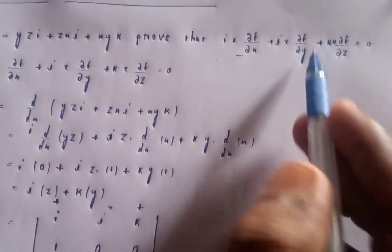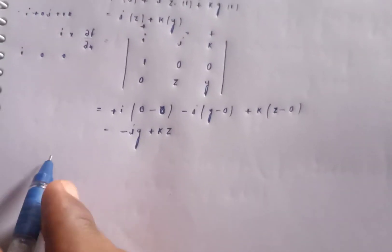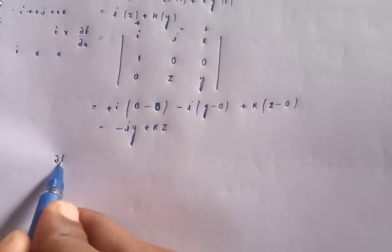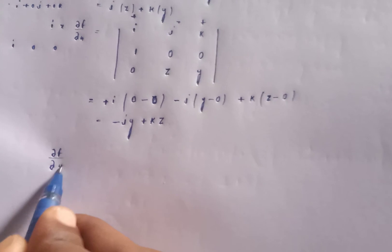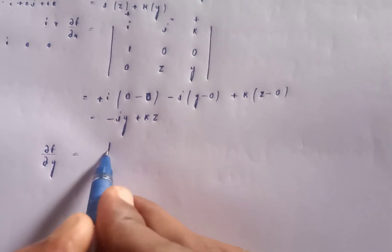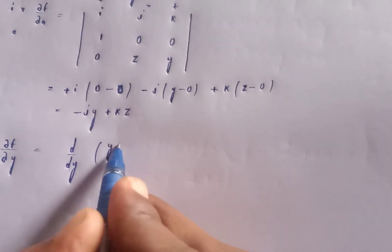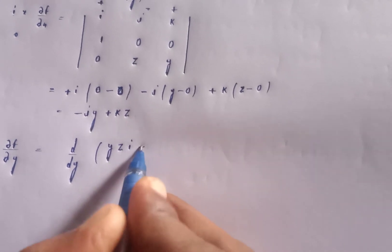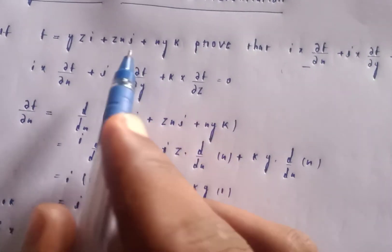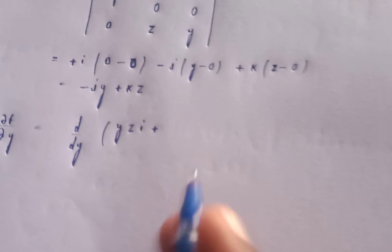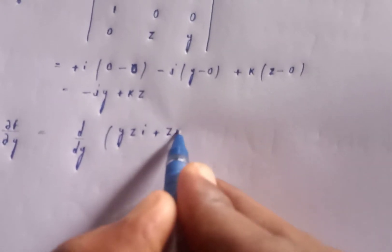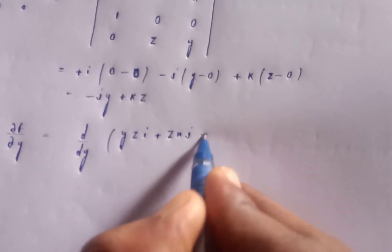Now compute ∂f/∂y. Taking d/dy of f, that is d/dy of yzi plus zxj plus xyk. With respect to y: d/dy of yz gives z for the i component.